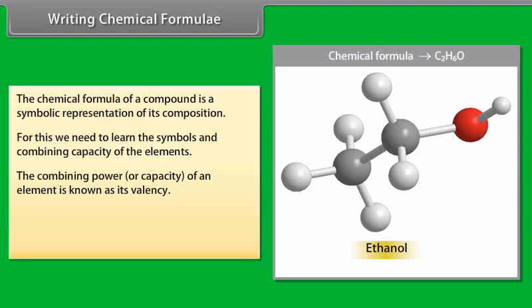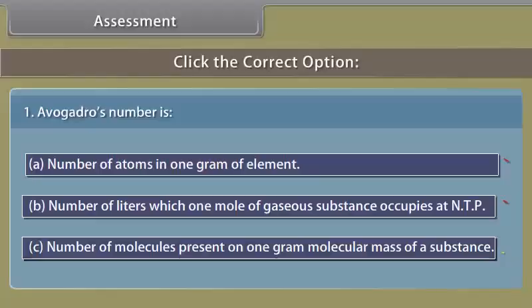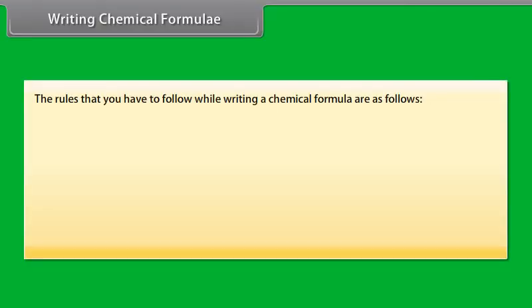Writing chemical formula. The chemical formula of a compound is a symbolic representation of its composition. For this we need to learn the symbols and combining capacity of the elements. The combining power or capacity of an element is known as its valency.